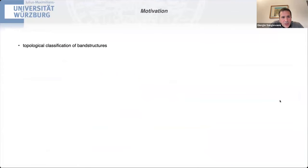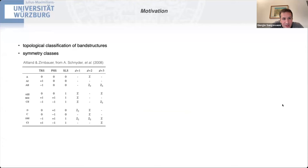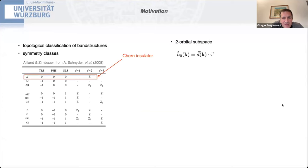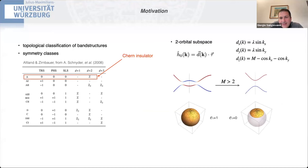Let me start from a bit of general motivation on how we classify topological band structures, using symmetries. Starting from the simplest case — absence of time reversal and particle-hole symmetry, like a Chern insulator — in a two-orbital subspace denoted by the vector d, I can distinguish between cases where the d vector winds around the whole unit sphere or only incompletely does so. That's a topological phase transition and the Chern number changes.